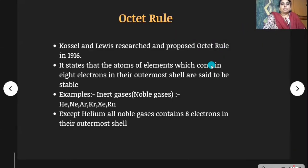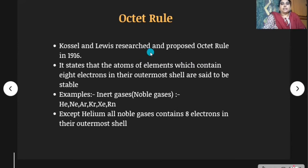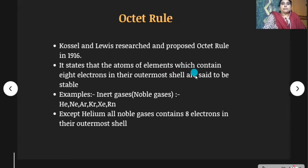Octet rule: Kossel and Lewis observed that the eighteenth group elements are inert in nature — they won't participate in chemical reactions. They concluded the reason: these elements have eight electrons in their outermost shell. So they proposed the octet rule in 1916. It states that the atoms of elements which contain eight electrons in their outermost shell are said to be stable. For example, inert gases — also called noble gases.